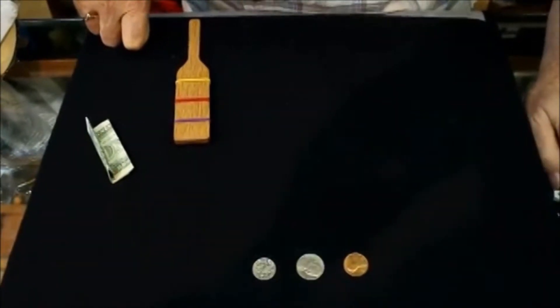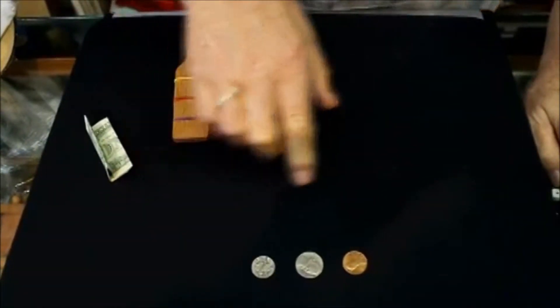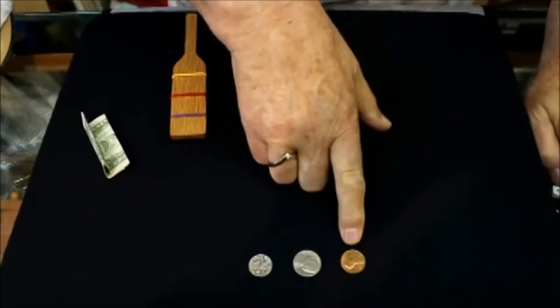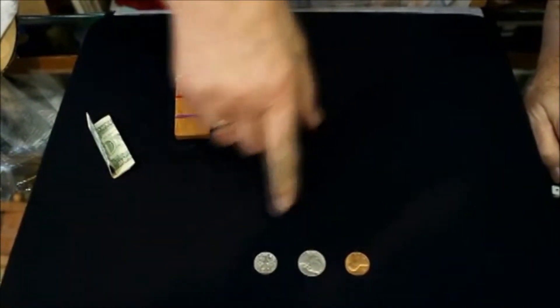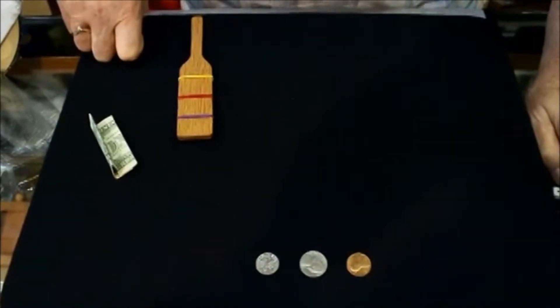Dime. Oh, I'll tell you once more. Johnny's mother had three children. The first one she named Penny. The second one Nick. What was the third one's name?